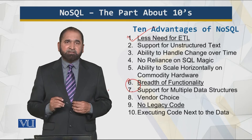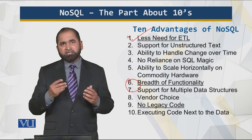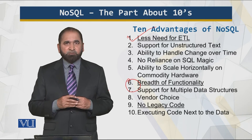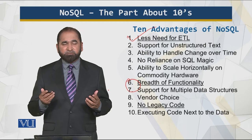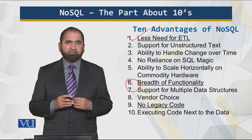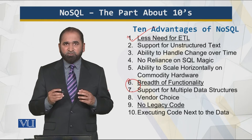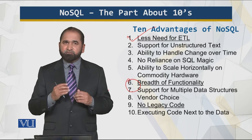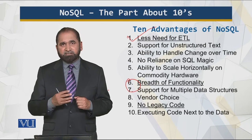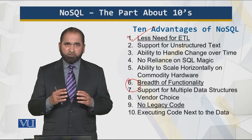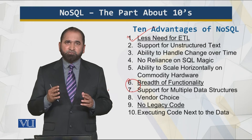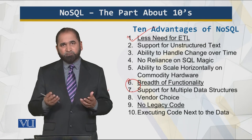The next advantage is the breadth of functionality. If you look at relational databases, there are certain market leaders, but they are all relational and not very different from each other in certain aspects. When we talk of NoSQL, there are four different types of databases supported, and that's the biggest advantage. Because of this breadth and diverse nature of NoSQL functionality, you are bound to find an implementation that meets your requirements.